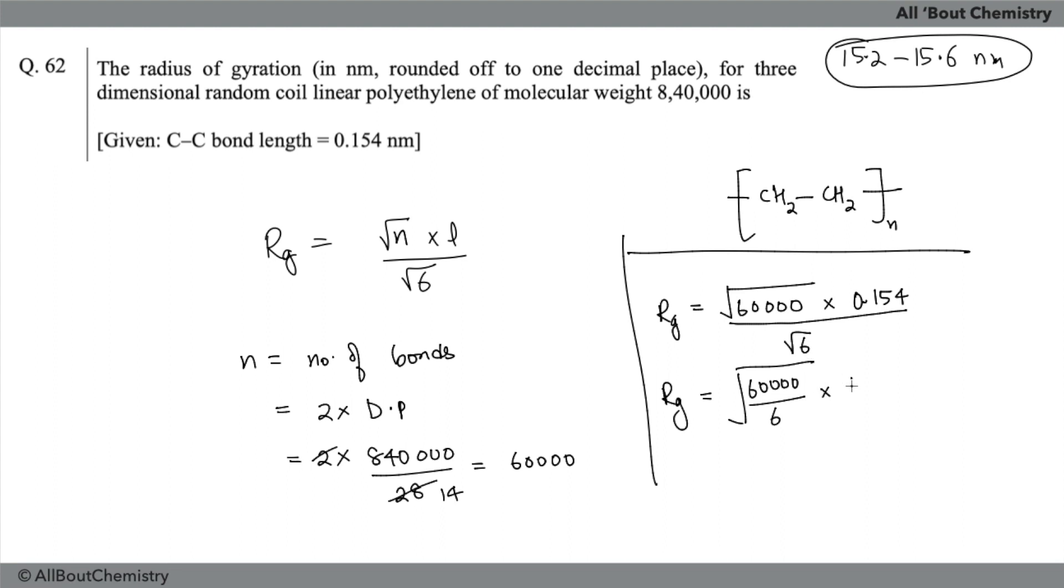Multiplied by 0.154, and you will get 15.4 nanometer. That lies in the range which is given to you, so that's why this is also correct. This is also correct according to the answer. There is nothing wrong in the radius of gyration question.